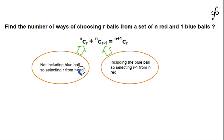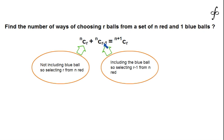Case 2: We include the blue ball. Since the blue ball is already selected, we need to choose r-1 more balls from the n available red balls. This can be done in nC(r-1) ways, because one spot is already filled by the blue ball and we need r-1 more to make a total of r balls.